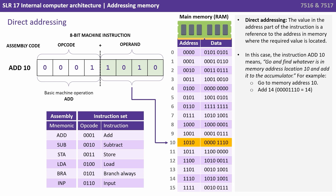As you've probably guessed the alternative is direct addressing. Here the value in the address part of the instruction is a reference to the address in memory where the required value is located. So in this case the instruction ADD 10 means go and find whatever is in memory address location 10 and add it to the accumulator. So for example we'd go to memory address 10 and in there we find the value 14, so this would actually add 14 to the accumulator.